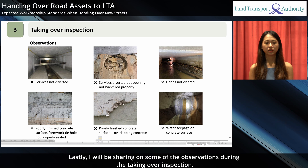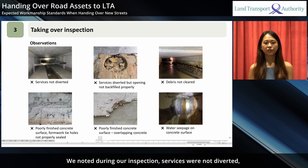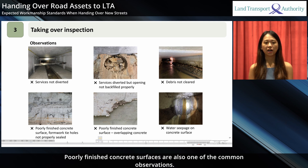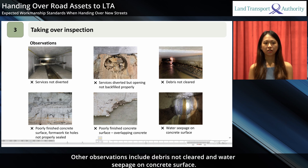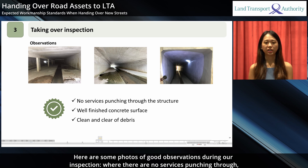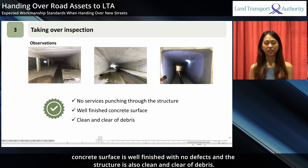I will now share some observations during the taking over inspection. During inspection, we noted that services were not diverted, or in instances where services were diverted, the openings were not backfilled with proper methods. Poorly finished concrete surfaces are also a common observation. Other observations include debris not cleared and water seepage on concrete surfaces. Good observations include no services punching through, well-finished concrete surfaces with no defects, and structures that are clean and clear of debris.